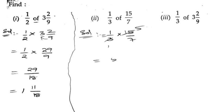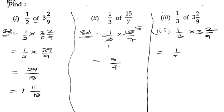Now let us do the third bit: 1/3 of 3 2/9. So 1/3 into - 9 times 3 is 27 plus 2 is 29 - 29/9. So 29 times 1 is 29, 3 times 9 is 27.